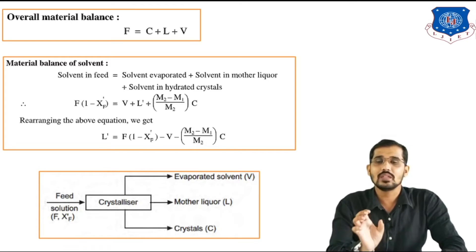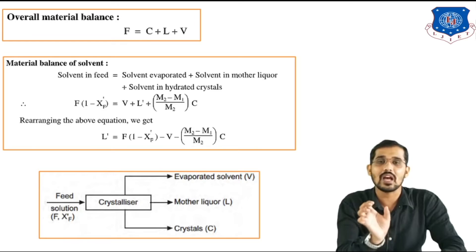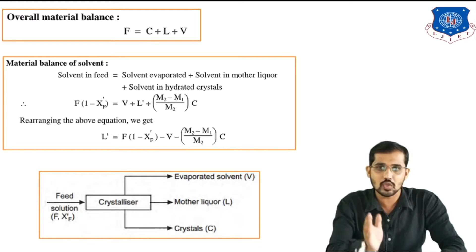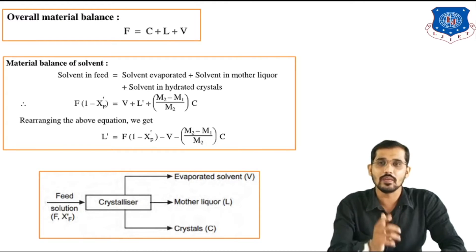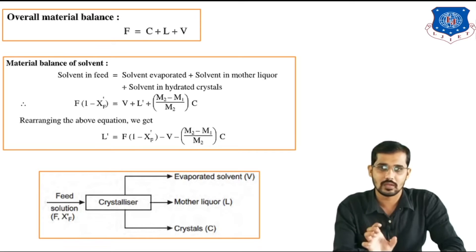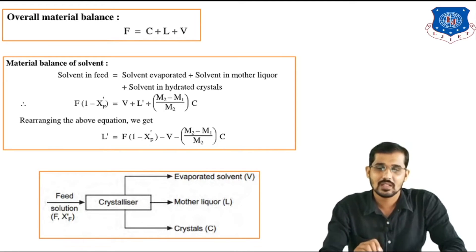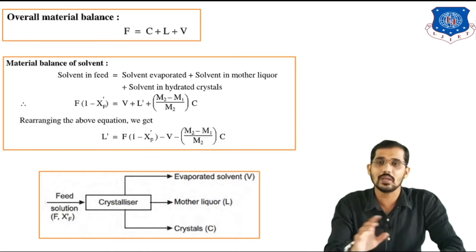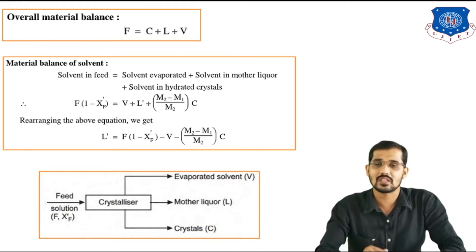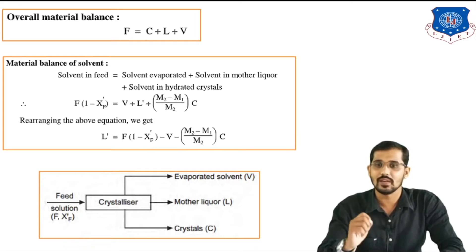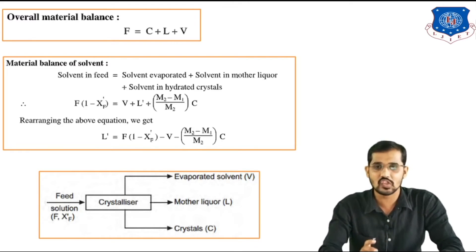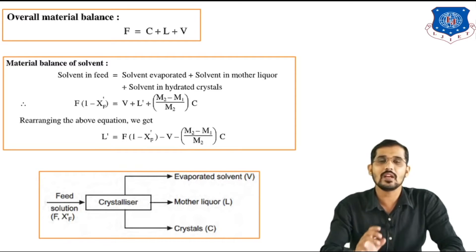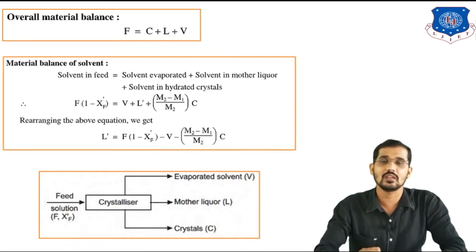Here M2 is solute plus solvent (total molecular weight), so M2 − M1 gives the amount of solvent, since M1 is the mass of solute alone. Therefore (M2 − M1)/M2 is the weight fraction of solvent in the hydrated crystal. Rearranging, we get: L' = F(1 − XF') − V − [(M2 − M1)/M2] × C. This is the mass balance for the solvent in the crystallization operation.